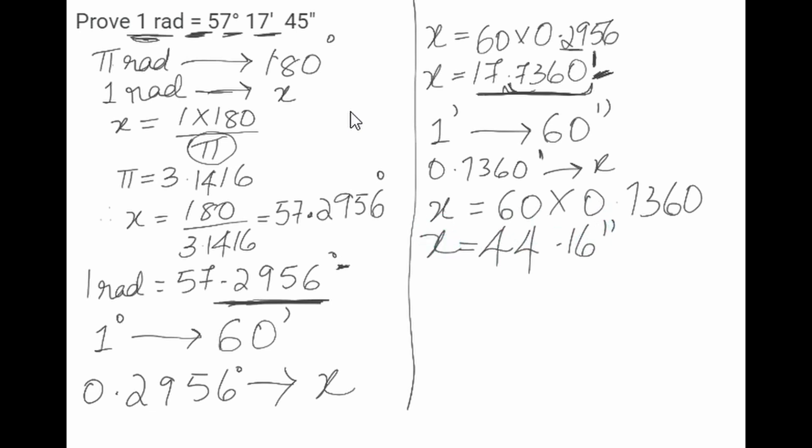Which we can write as approximately 45 in whole number, we can write it as 45 seconds. Therefore, we have 1 radian in degrees, minutes, and seconds.